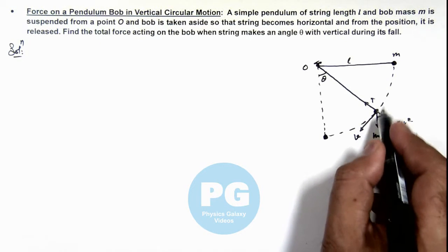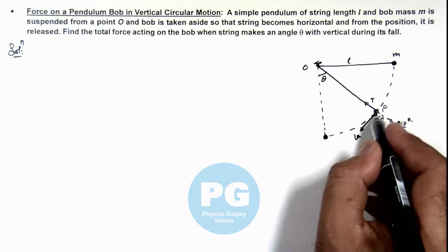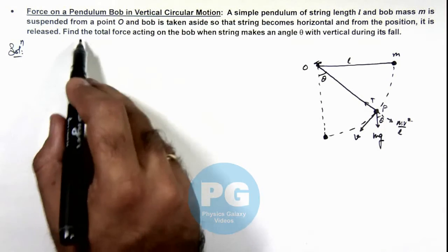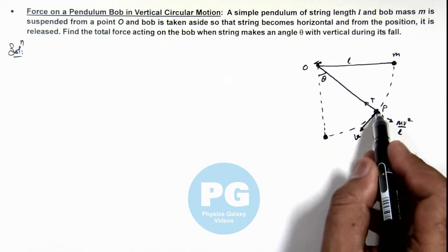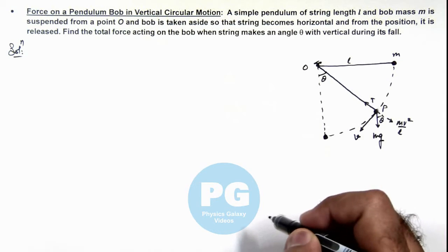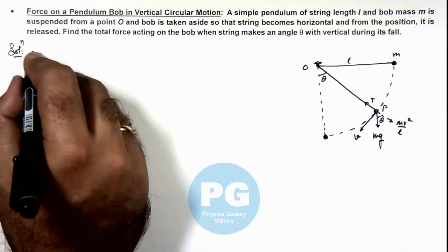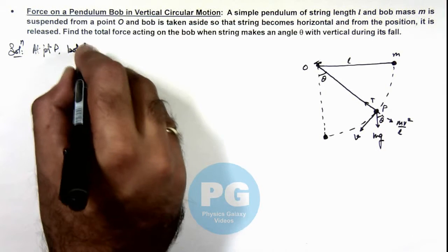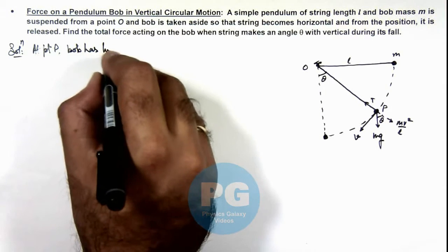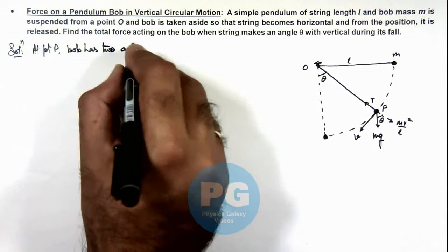At this point P, we can find out the acceleration of the bob, and to find the total force, we can use Newton's second law as mass multiplied by its acceleration. So we can write at point P, the bob has two acceleration components.